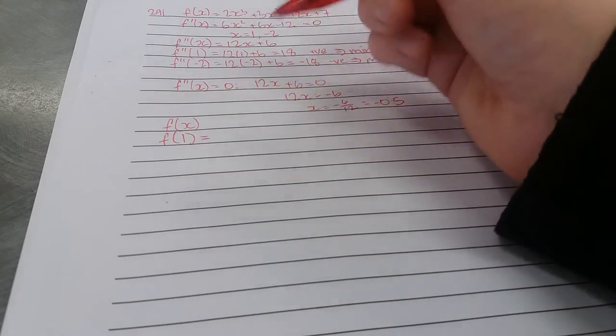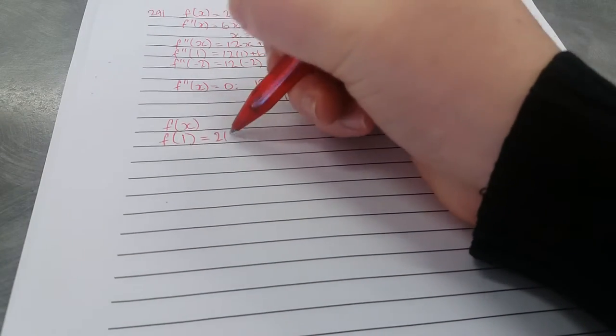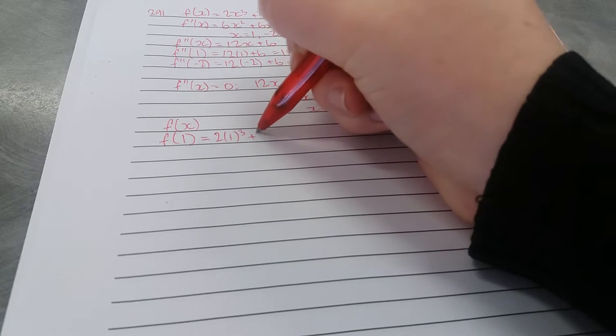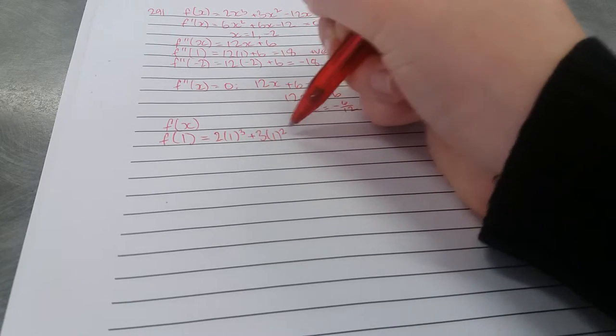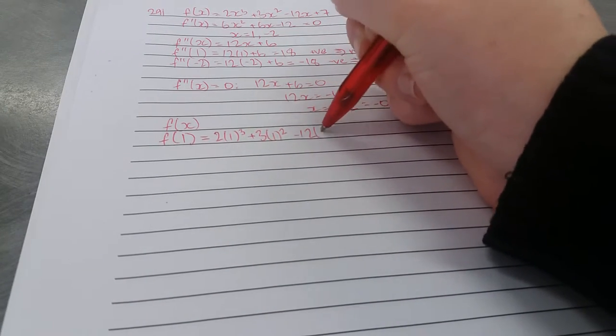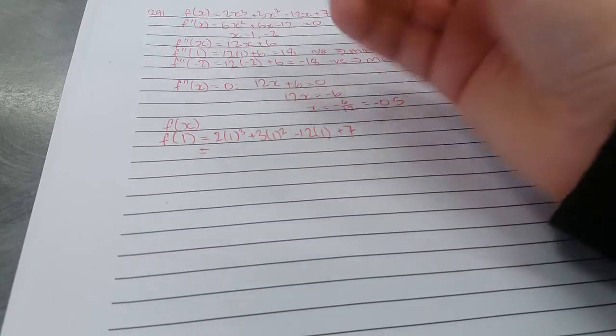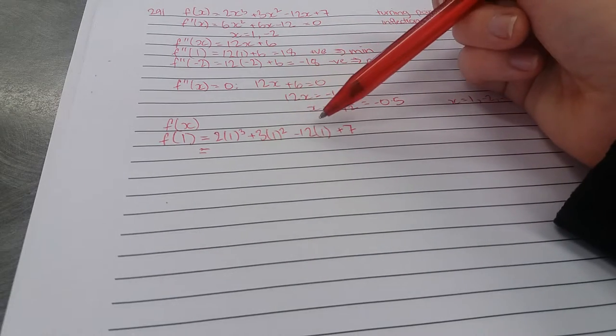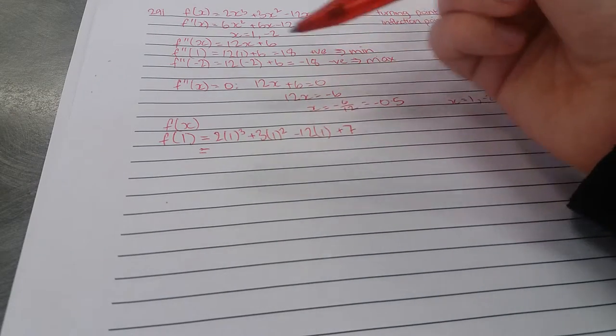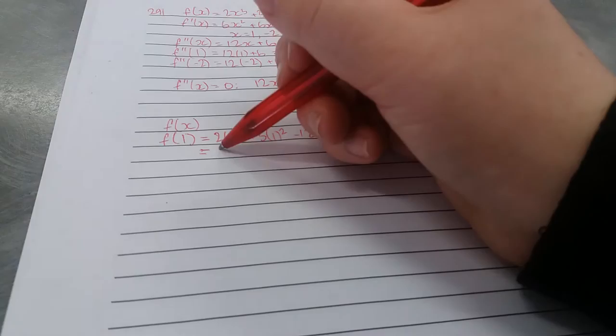f(1) = 2 times 1³ plus 3 times 1² minus 12 times 1 plus 7, which is 2 + 3 = 5, minus 12 = -7, plus 7 is 0.